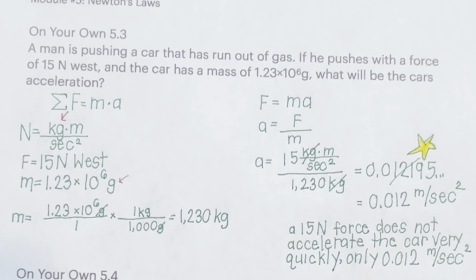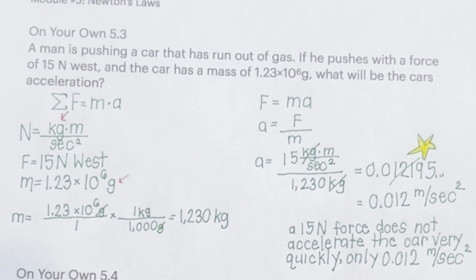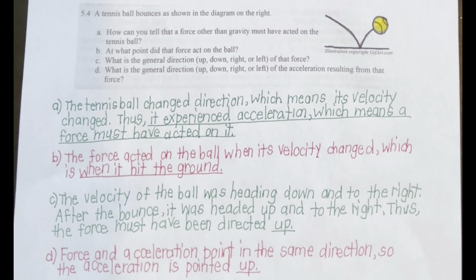You get 0.012 meters per second squared. A 15 Newton force, which is pretty considerable, does not accelerate the car very quickly — only 0.012 meters per second squared. Since the acceleration has the same sign as the force, you know that they are both pointed in the same direction.